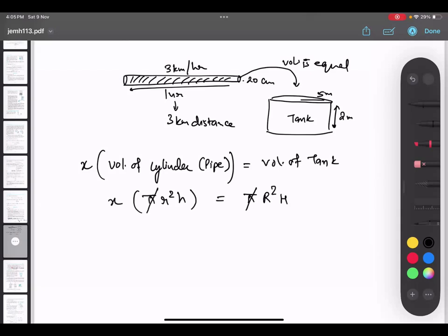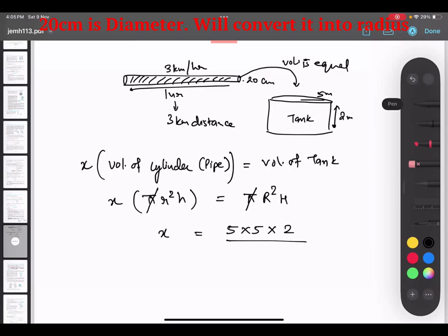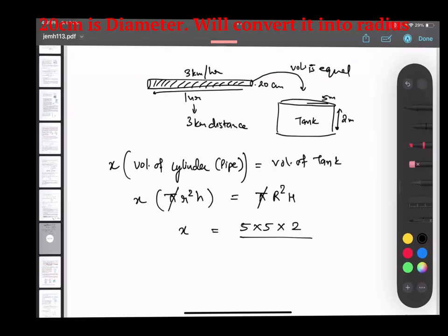π, π, π getting cancelled. Clear? Yes. r over here is 5 into 5 into 2, and r over here is 20 centimeter. So 20 centimeter into meter you have to do.